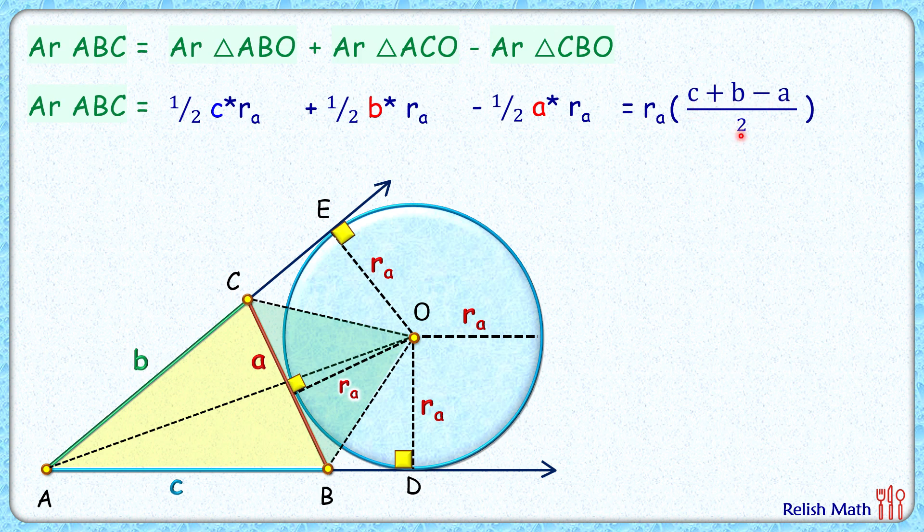minus a, all divided by 2. In the numerator, let's add a and subtract a. When we add a, we get a plus b plus c. Subtracting a gives us 2 times a. Now a plus b plus c divided by 2, that is the semi-perimeter.